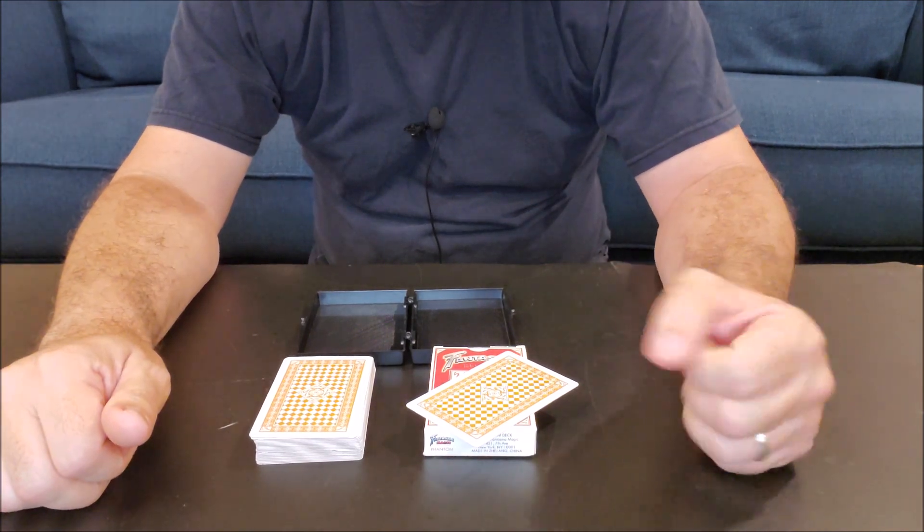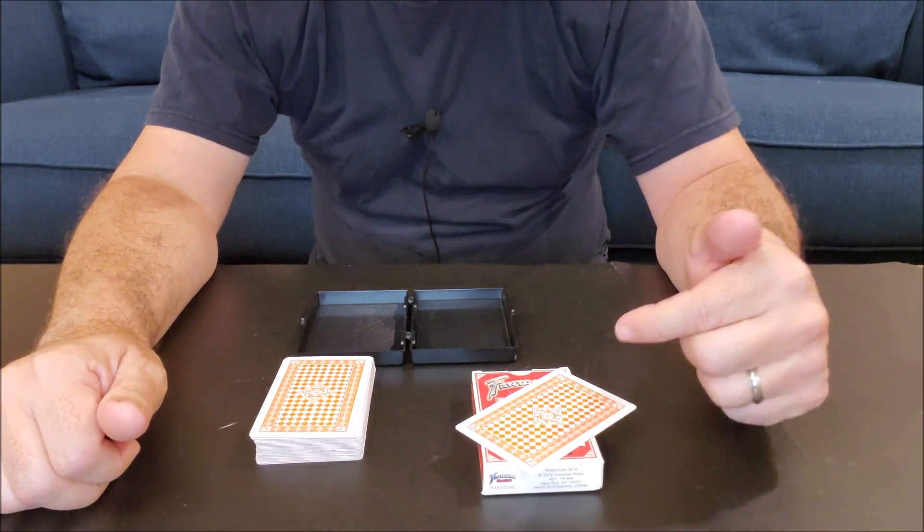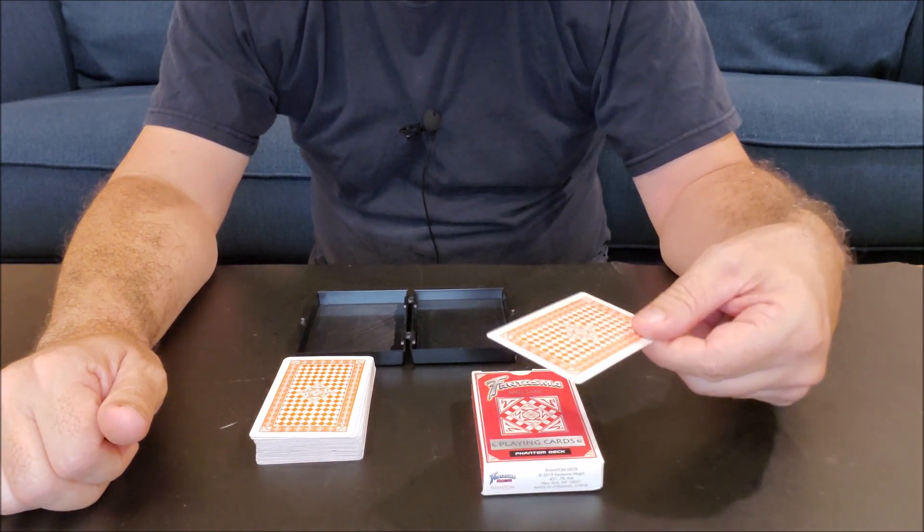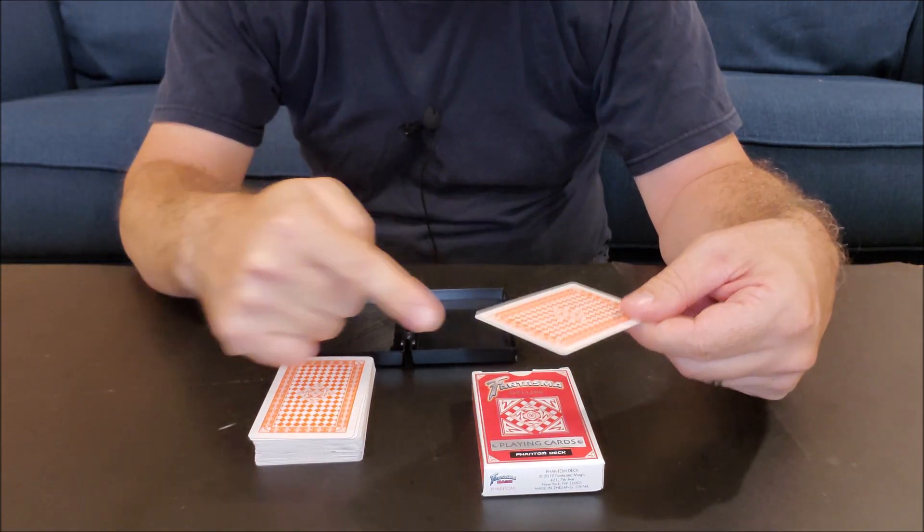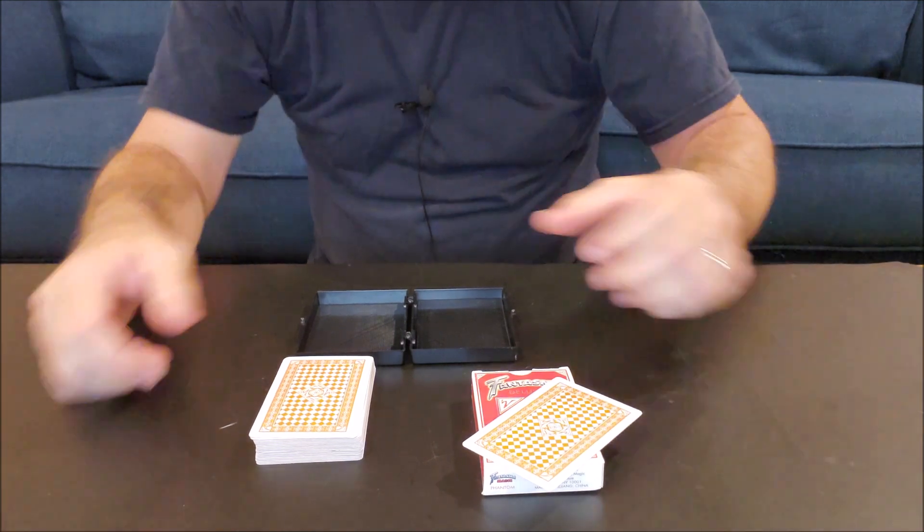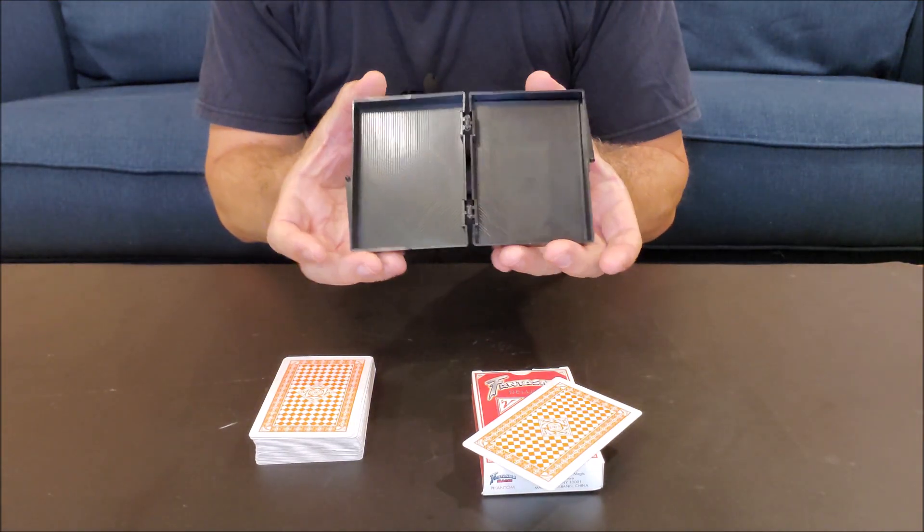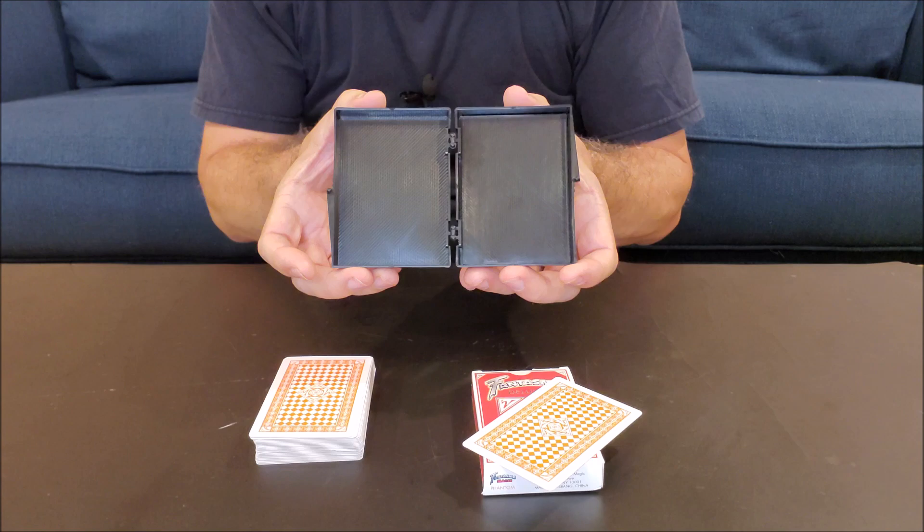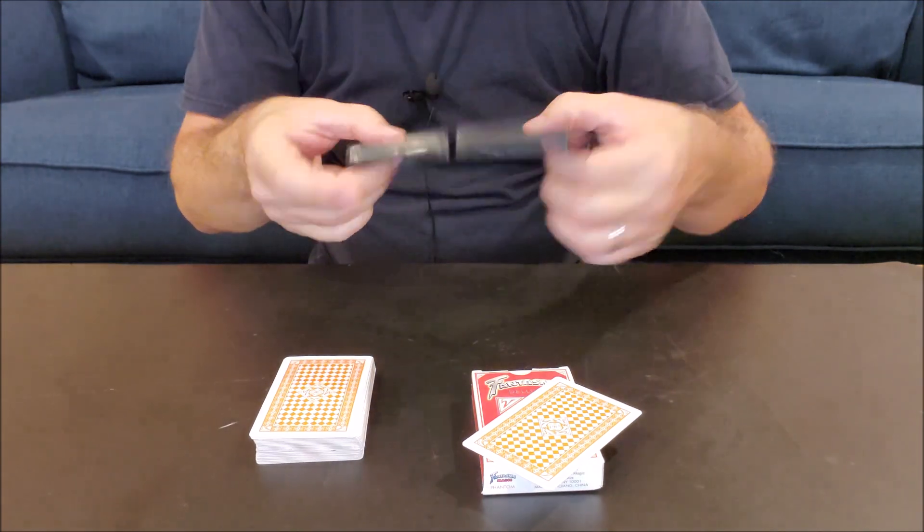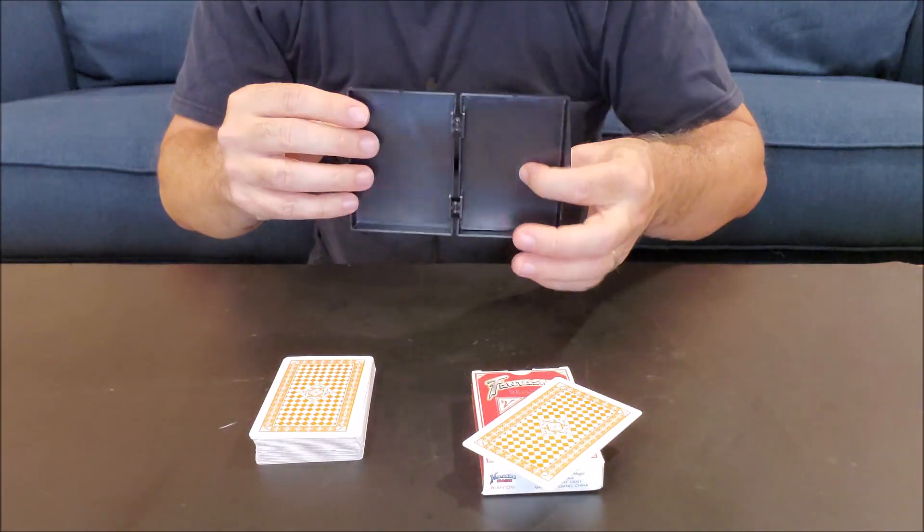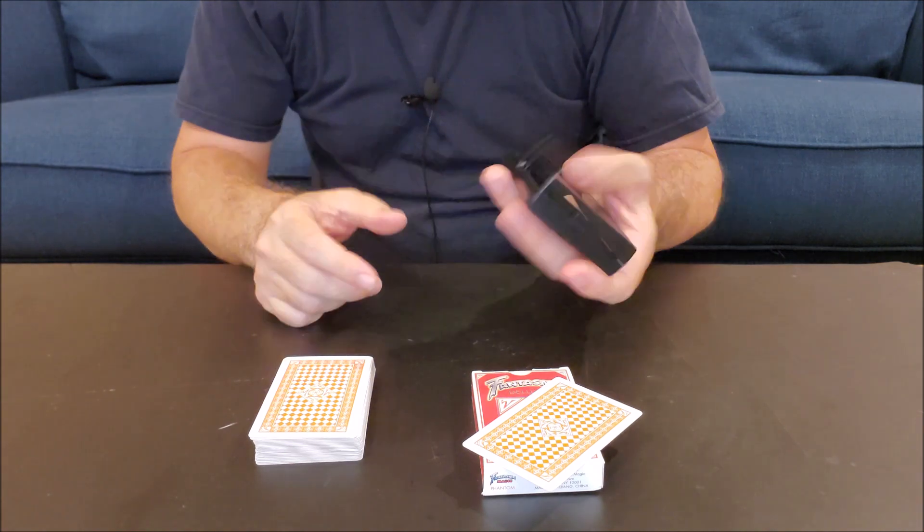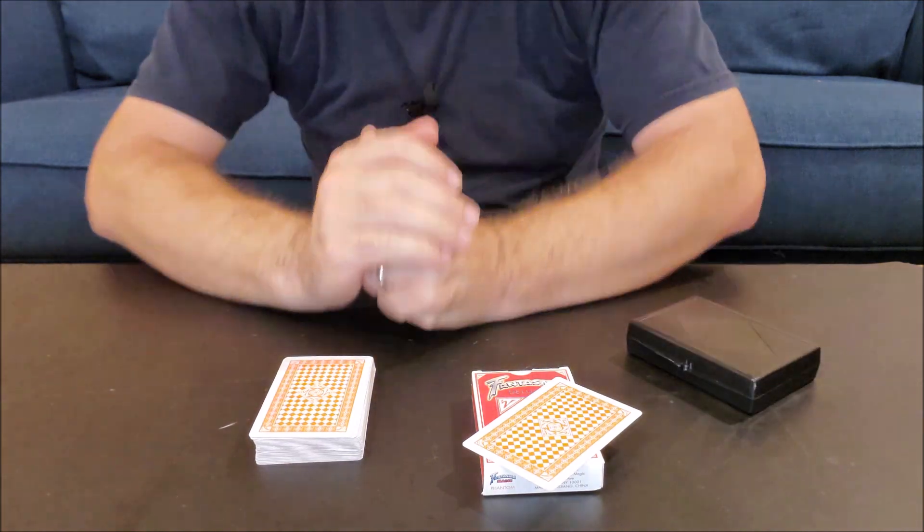I'm going to have you select a card in a minute but first I want you to notice that I've already made my selection. This card right here, this is my prediction. This is the prediction that I've already made. Second, I want you to see that I have this box but there's nothing inside. The box is completely empty. There's nothing in this box. I'm going to close the box and then we're going to do a trick together.